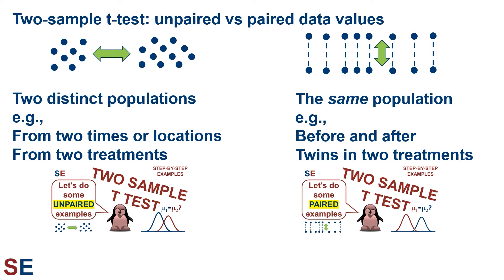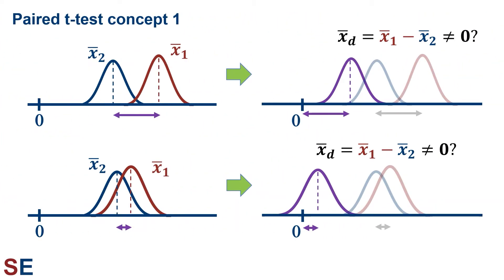The paired t-test works by looking at samples from each population, shown in red and blue, and calculating a new set of values based on the differences between each pair. The difference between the sample means will be the mean of the differences, and those values create a confidence interval around that value, shown in purple. A big difference between sample means results in a large mean for the differences and a confidence interval that doesn't include zero, indicating the true difference is very unlikely to be zero. A small difference results in a confidence interval that includes zero, indicating the true difference may well be zero.